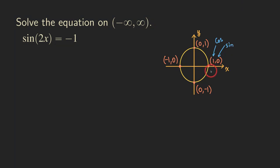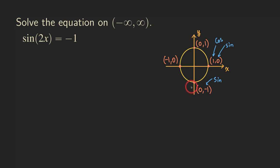Our goal is to pick the point that, when we plug the corresponding angle into the sine function, gives us negative 1. As you can see, the only point that gives us negative 1 is when we plug in the angle of 270°, because the y-value gives the sine value. So the angle we want is 3π/2 or 270°.